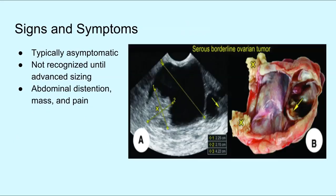A BOT is not likely to be clinically detected until it is advanced in size and associated with abdominal symptoms, including abdominal pain and increasing girth or abdominal distension. Many women are asymptomatic.